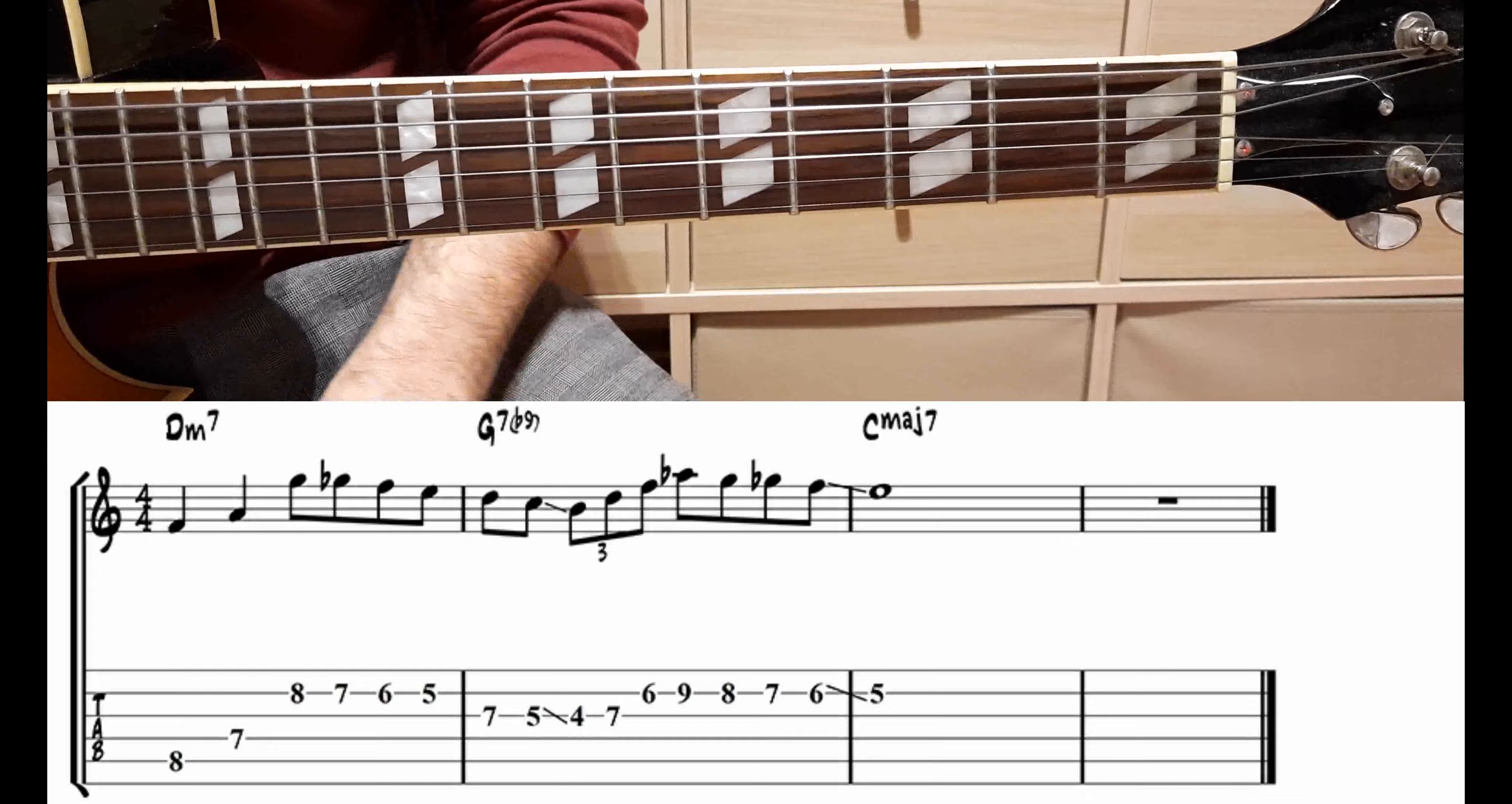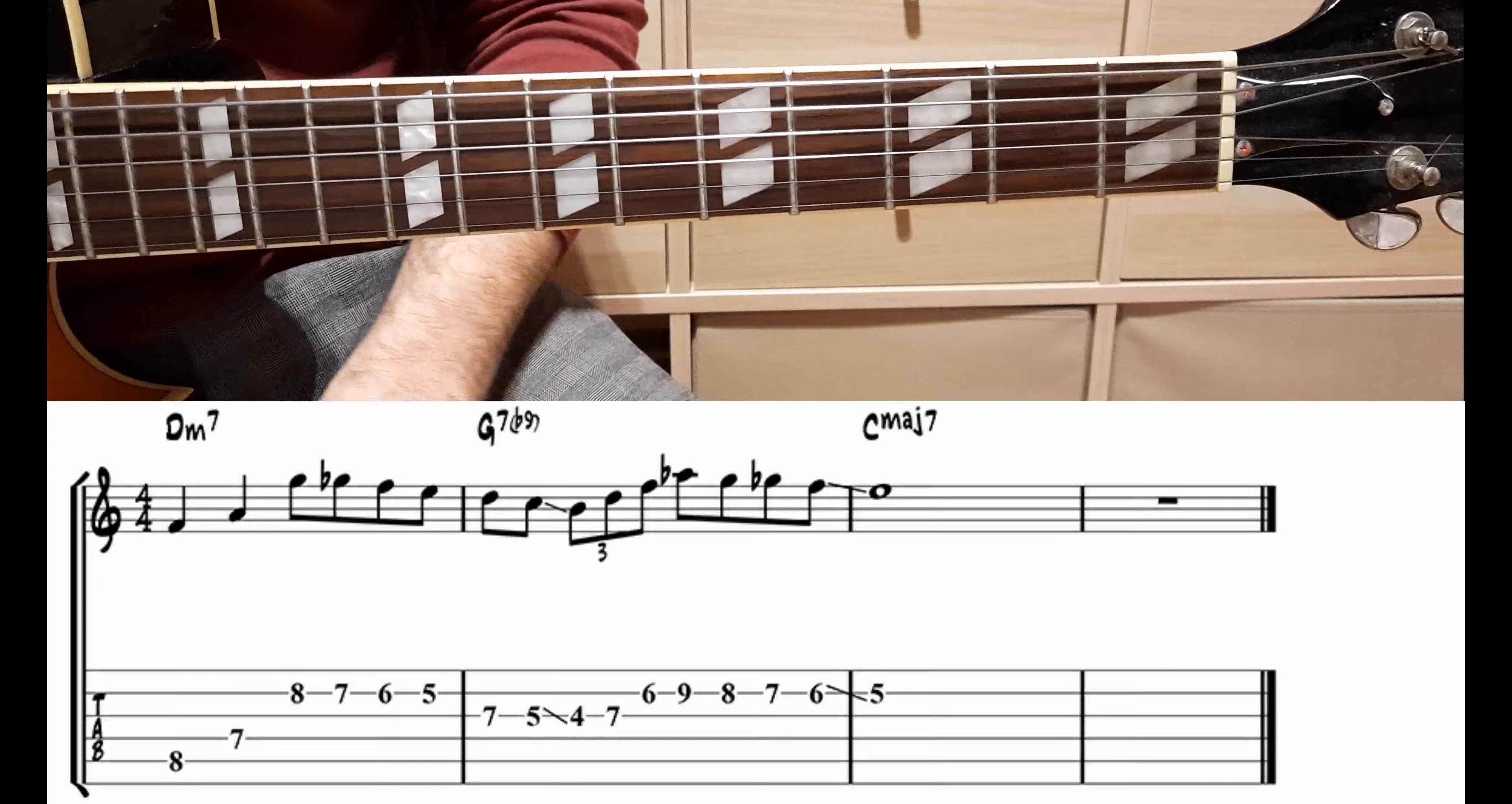Gli accordi di questo 2-5-1 sono Re minore settima, G7 e C7, è un classico 2-5-1.